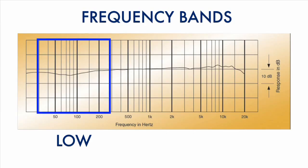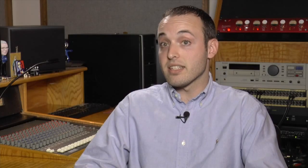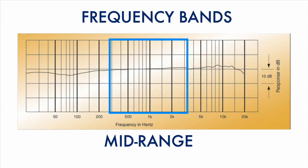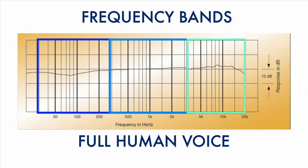Here are a couple of recordings that demonstrate each frequency band. Here's an example of just the low range: 'Our Alliance continually anticipates and reveals opportunities.' Now here's an example of the high end: 'Our Alliance continually anticipates and reveals opportunities.' And here is an example of the mid-range — kind of sounds like a telephone voice: 'Our Alliance continually anticipates and reveals opportunities.' All of those elements together make up the full human voice.